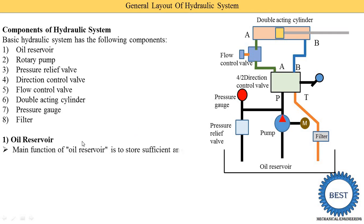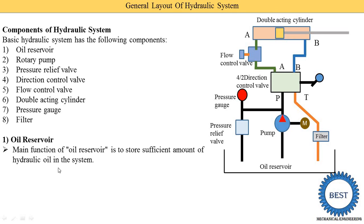Now we understand all the components in detail. The first component is the oil reservoir. In this image, you see the oil reservoir is provided at the bottom. The main function of the oil reservoir is to store a sufficient amount of hydraulic oil in the system — it is generally used for the storage of oil. Similar to how we store petrol or diesel in a car tank, the oil reservoir is the storage place for oil in a hydraulic system, which uses liquid (generally oil), unlike pneumatic systems which use air.